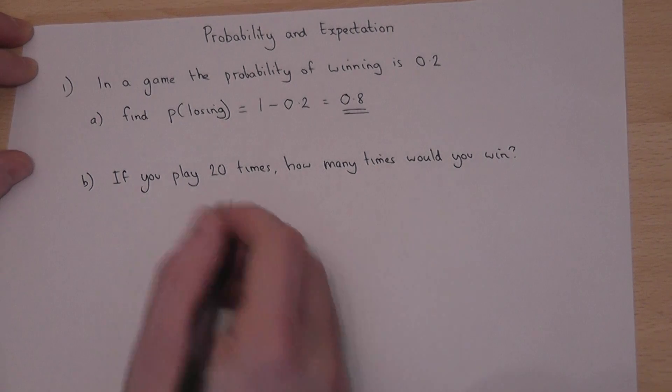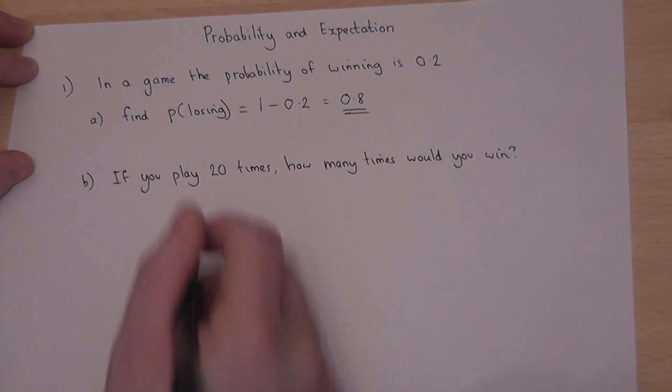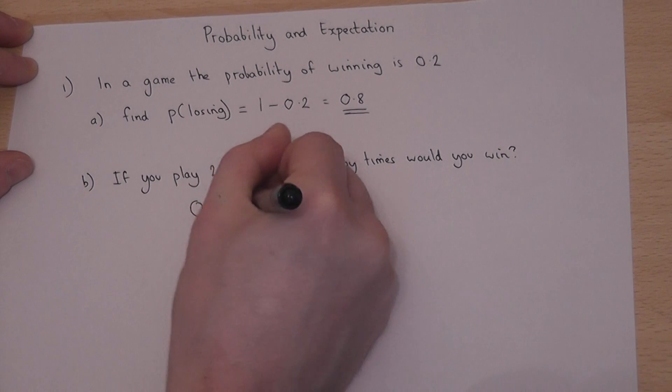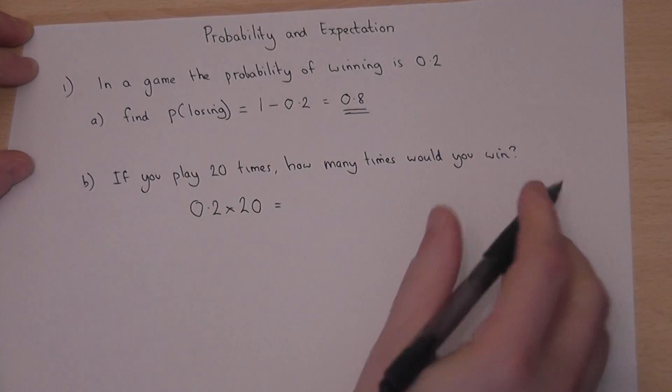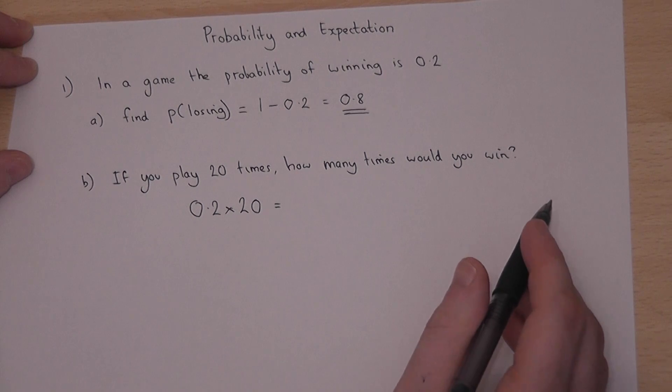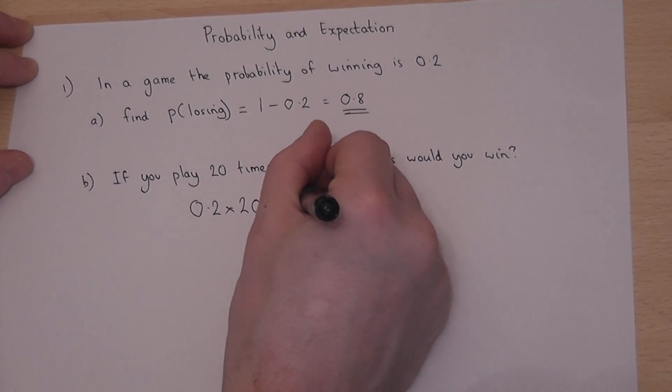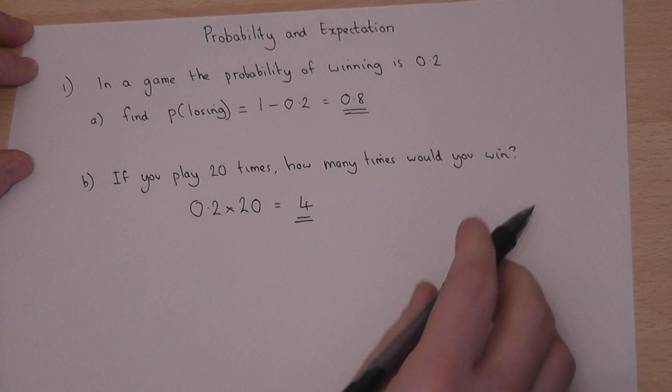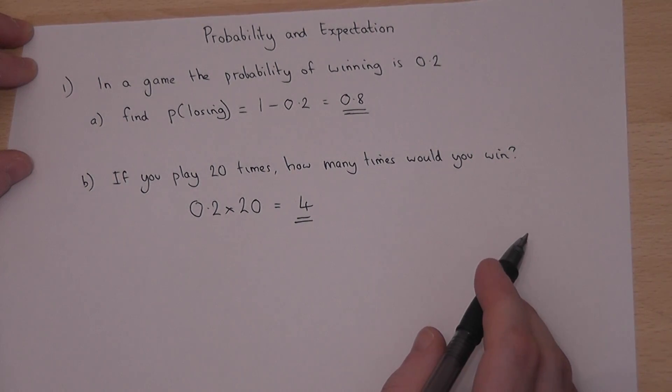Well, to do this, we multiply the chance of winning, which is 0.2, by the total number of times played. So 0.2 times 20 just equals 4. So we would expect to win 4 times.